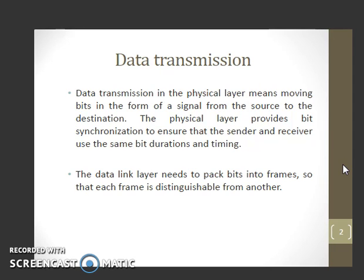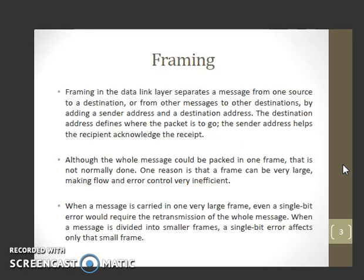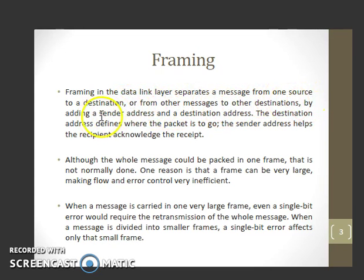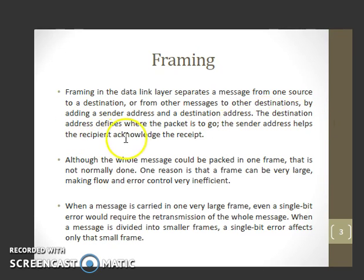The data link layer needs to pack bits into frames so that each frame is distinguishable from another. Framing in the data link layer separates a message from one source to a destination, or from other messages to other destinations, by adding a sender address and a destination address. The destination address defines where the packet is to go, and the sender address helps the recipient acknowledge the receipt.